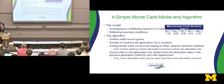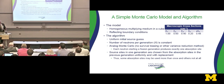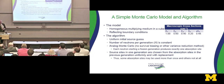An important point: the source sites in one generation are chosen from the absorption sites in the previous generation uniformly and with replacement. When starting neutron one, its location is equally chosen from all fission sites produced in the previous generation. When starting neutron two, it also chooses uniformly from all those sites — the fact that we chose one site for neutron one doesn't remove it from the pool. So some absorption sites may be used more than once and others not at all.